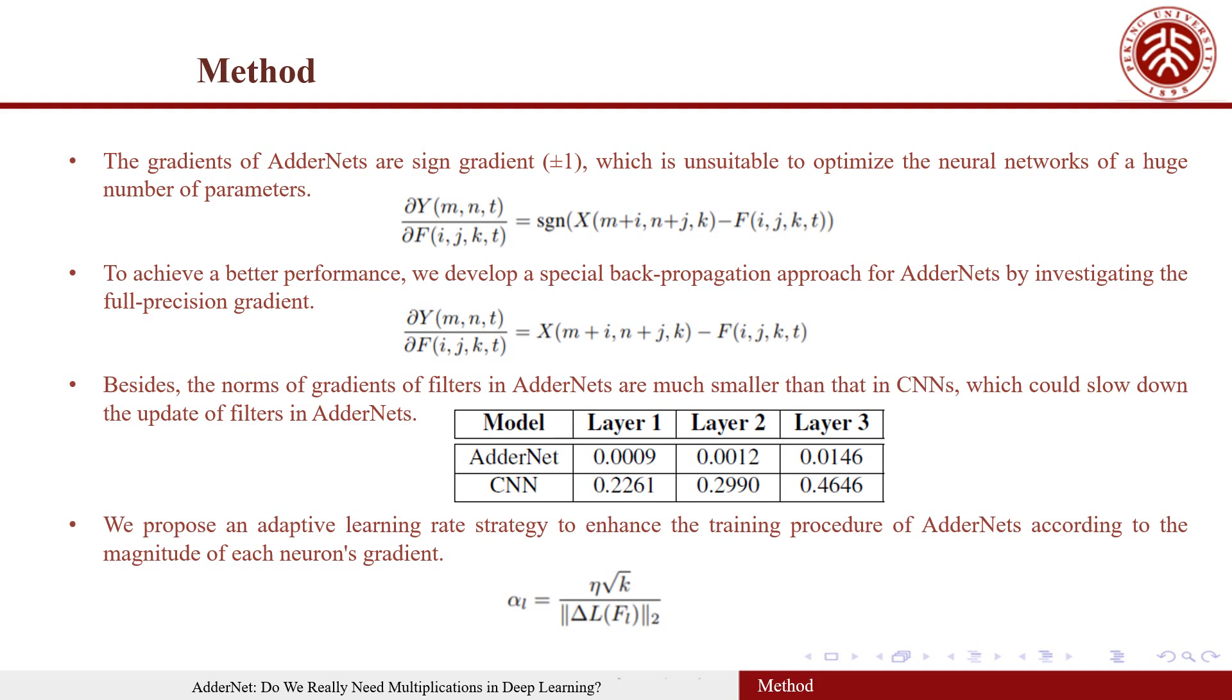Besides, the norms of gradients of filters in AdderNet are much smaller than that in CNNs, which could slow down the update of filters in AdderNet. As the table shows, the gradients of different layers of AdderNet are very small. Thus, an adapted learning rate strategy to enhance the training procedure of AdderNet is proposed, according to the magnitude of each neuron's gradient.